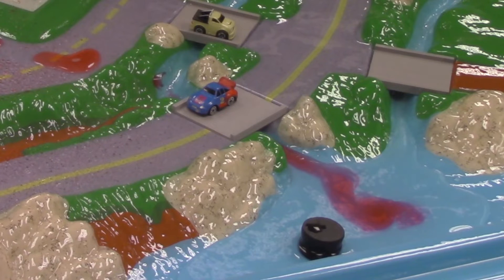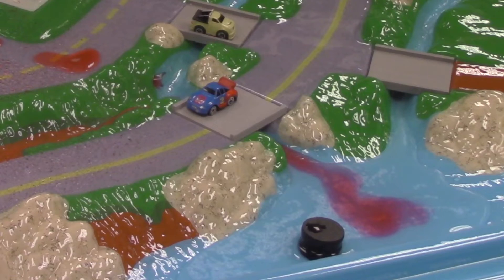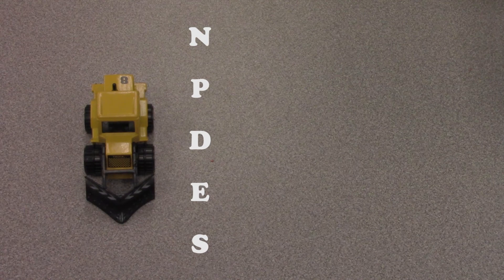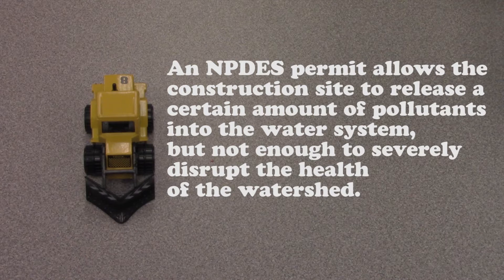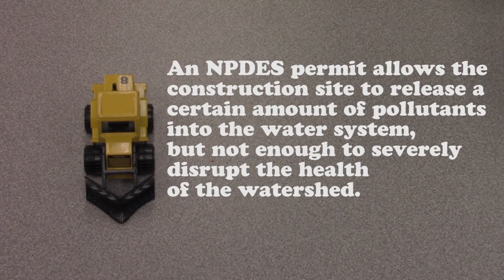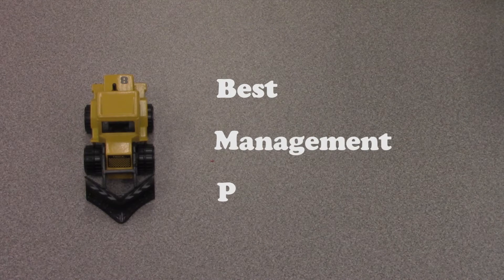If we're dealing with a construction site that is anywhere above an acre or more of disturbed surface, it has to get what is called an NPDES permit — that's the National Pollutant Discharge Elimination System permit. This allows the construction site to release a certain amount of pollutants into the water system, but not enough to severely disrupt the health of the watershed. To cut down on these pollutants, a site could use some best management practices, or BMPs, to reduce the flow of soil getting into our rivers.